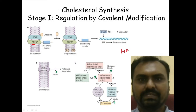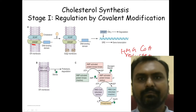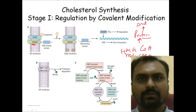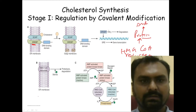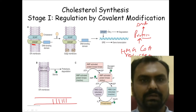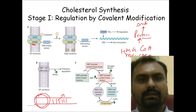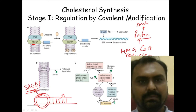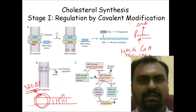HMG-CoA reductase is an enzyme, so it is a protein, and it is made from DNA. In our gene — a nucleotide sequence that forms the protein — there is a promoter region. At the promoter region, the Sterol Response Element Binding Protein, or SREBP, binds and helps in the transcription and translation of the HMG-CoA reductase enzyme.